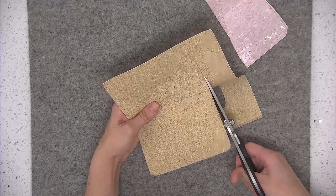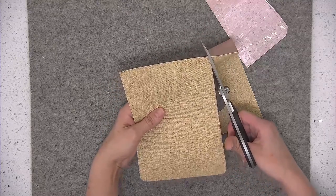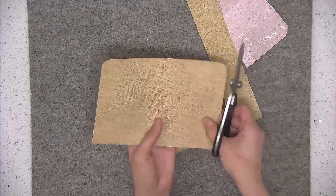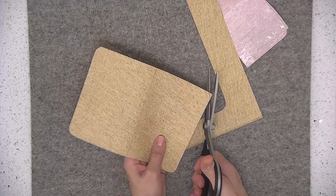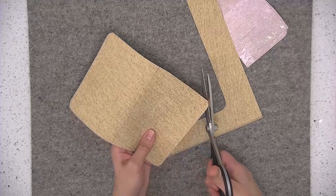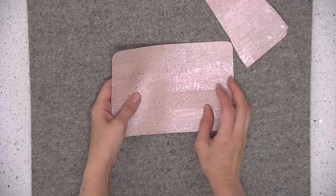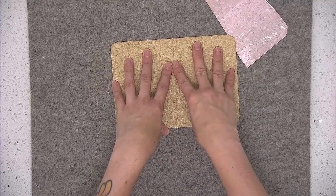Okay so I decided to leave my passport holder unlined which means you can see the backing on the finished passport holder. If you would like your piece to be lined you can cut out a second piece of cork fabric from the main panel and place those two pieces wrong sides together right now.